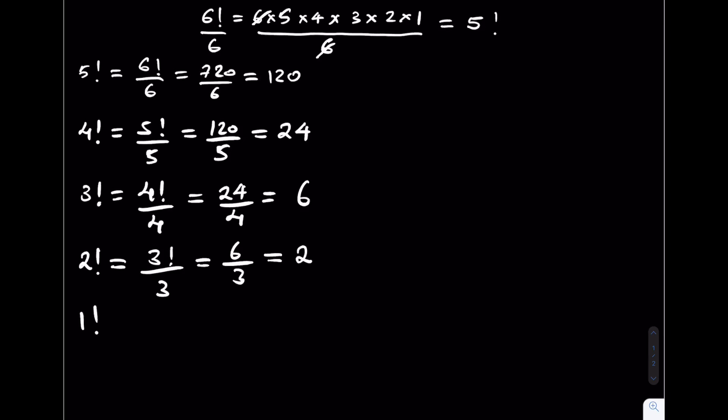1 factorial is given by 2 factorial over 2 which is equivalent to 2 over 2. This is equal to 1.